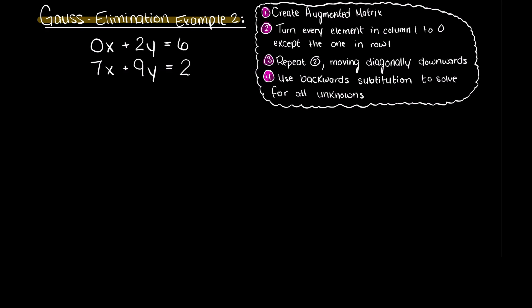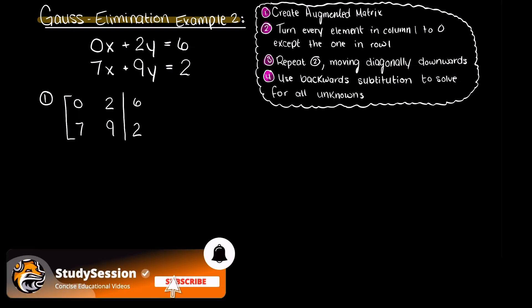Our first step says to create an augmented matrix, which separates our coefficient matrix and our constant matrix, or our scalar matrix.